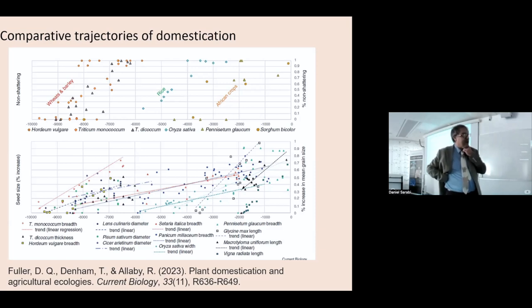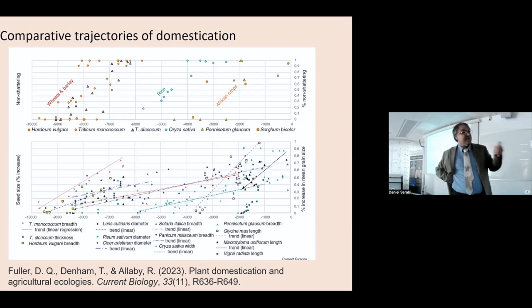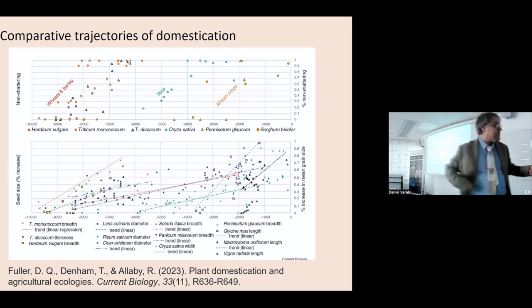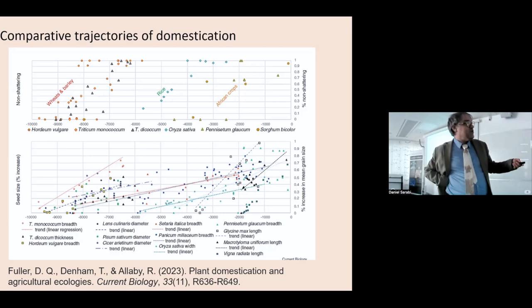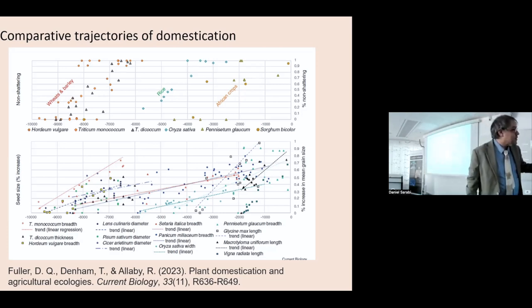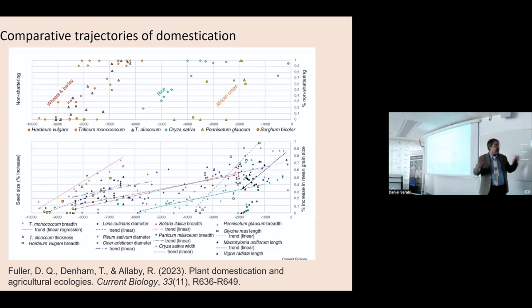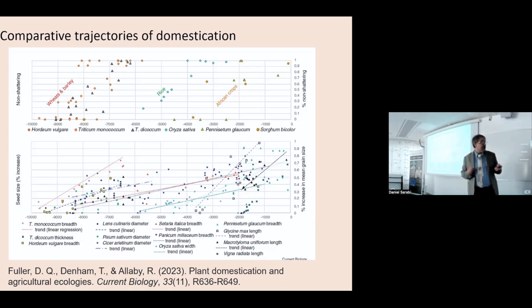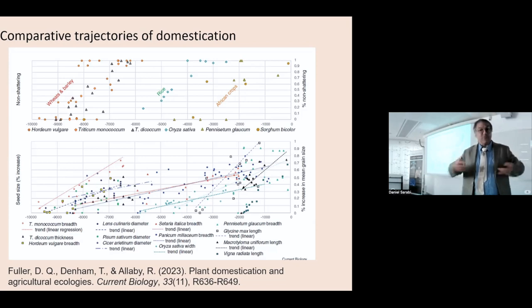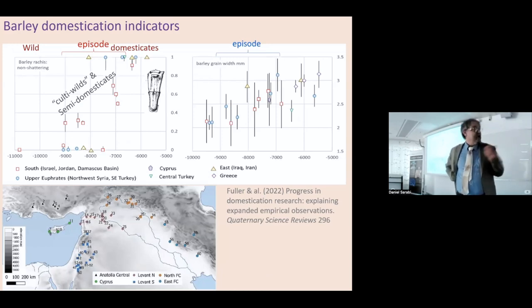This is a snapshot of where we are now — by no means all species, but species with large data sets for seed size increase, shown as percentage increase in the mean of populations, so you can put lots of species on one percentage graph. We've got two species of wheat, barley, rice, some sorghum, and pearl millet from Africa, and various crops for sizes. You can see they're starting and ending at different times, and the rates of seed size increase on average are not the same for all crops, but the directionality is there. That's where we are today using conventional methodologies.